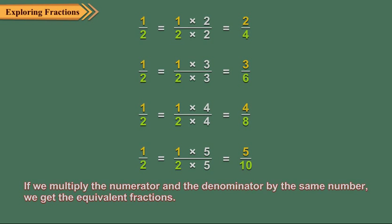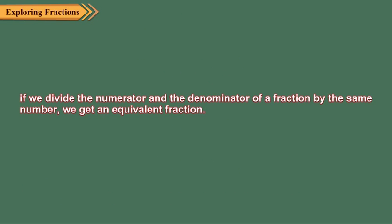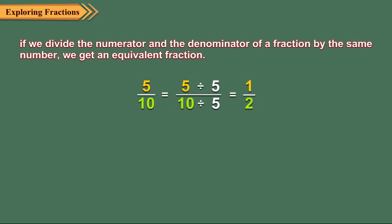In the same way, if we divide the numerator and denominator of a fraction by the same number, we get an equivalent fraction. For example, if we divide the numerator and denominator of five upon ten by five, we get one upon two. So, five upon ten and one upon two are equivalent.